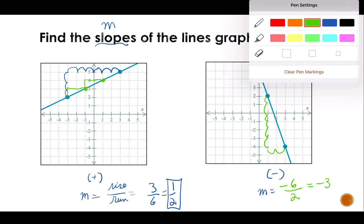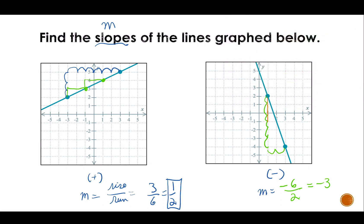And you could see that if I went down three and over one, I'm already at a point on the line. Down three over one, I'm at a point on the line. So we may need to simplify our slopes.